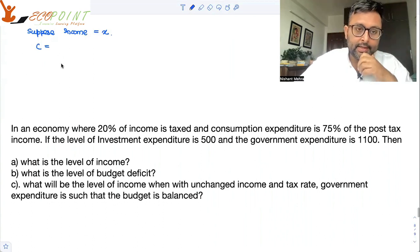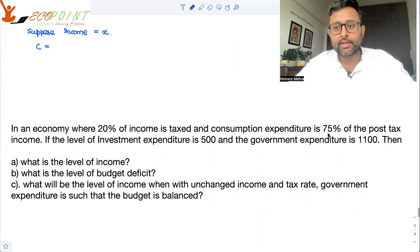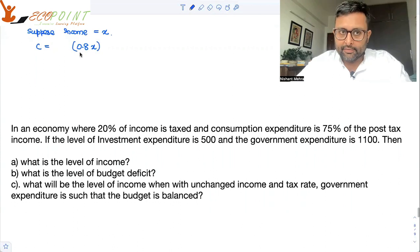you're given that 20% of income is taxed and the consumption expenditure is 75% of the post-tax income. So, if my income is X, 20% of that is taxed. So, I'm left with only 80% of income